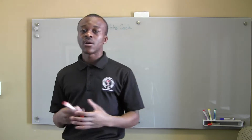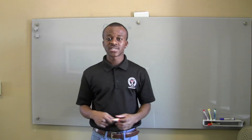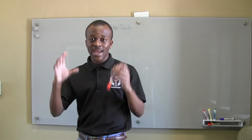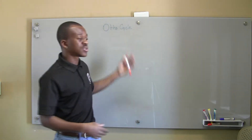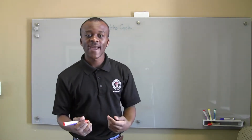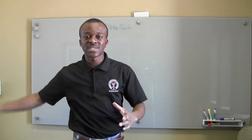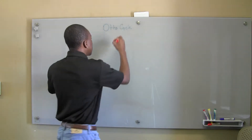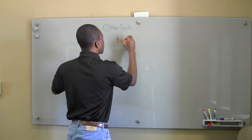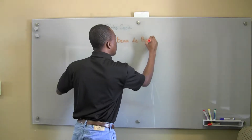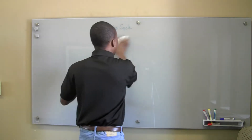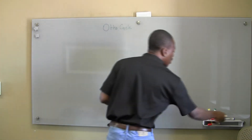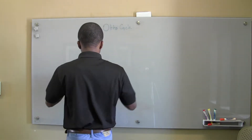That expansion gives us some work production, and that's basically what we're here to talk about. You may see the Otto cycle referred to as the Beau de Rochas cycle. Otto, I believe, was a scientist who got his findings from Beau de Rochas, and you may see it called the Beau de Rochas cycle in French. Know that they're the same thing. With the Otto cycle, you need to know four processes that are going on.